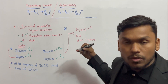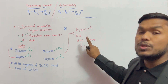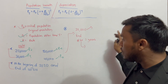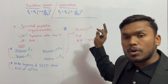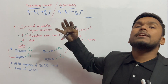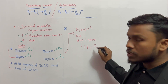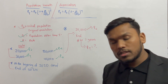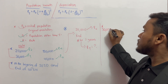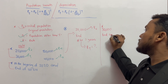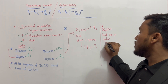How do you find the population after 2 years when starting with 20,000? After 2 years — wait, let me clarify — it's actually asking about 3 years before.